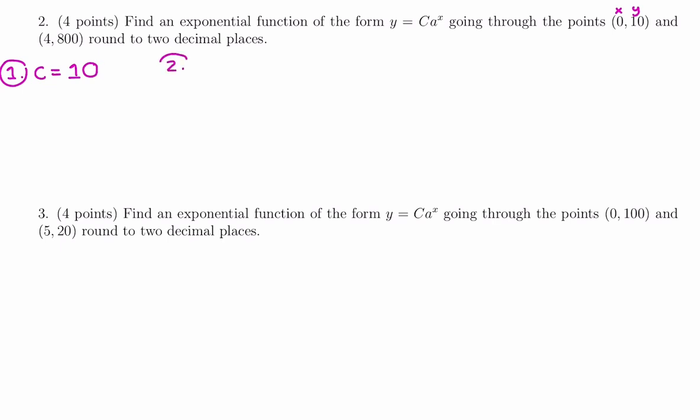Our second step is to find a by using the non-zero point. So we're going to plug into y equals c times a to the x, and we're going to use the other point that we're given, 4 comma 800.